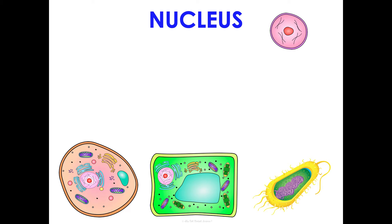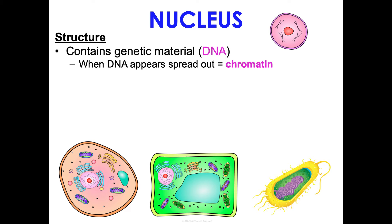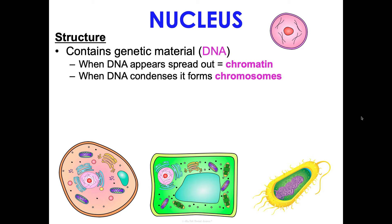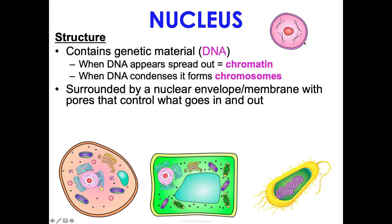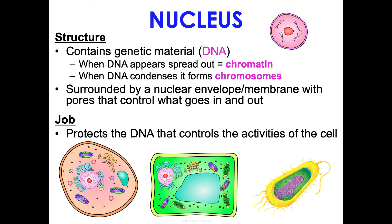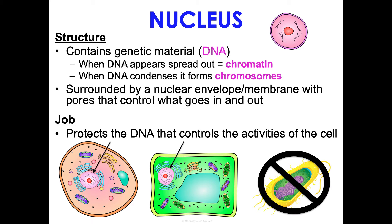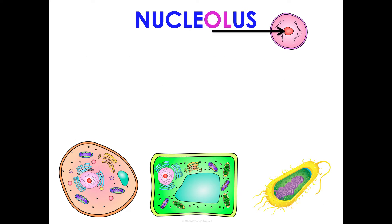The nucleus is what makes eukaryotic cells eukaryotes. It contains genetic material — our DNA. When DNA appears spread out, it's known as chromatin. When DNA condenses before the cell divides, it forms chromosomes. The nucleus is surrounded by a nuclear envelope with pores that allow things in and out. The job of the nucleus is to protect the DNA, because DNA controls the activities of the cell — it's the instructions for making proteins, which run your body.